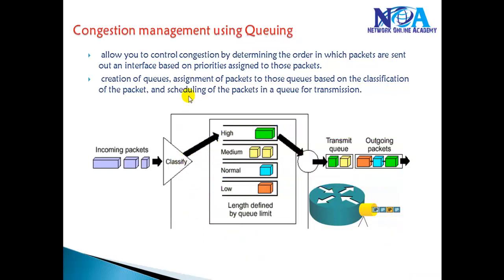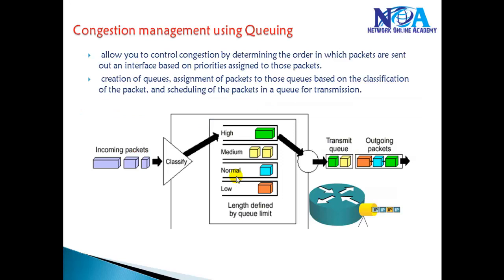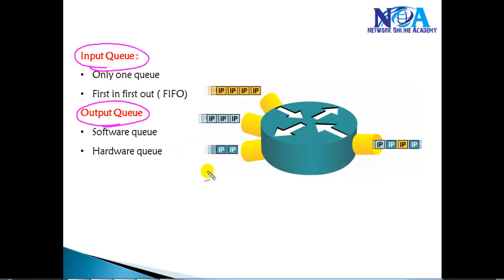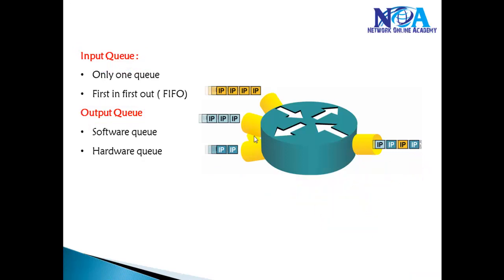We will discuss different queuing mechanisms in this section in much more detail. But first, let us understand some basic queuing options. Queuing is a mechanism of arranging packets into the local buffer before sending on the output interface, instead of getting dropped, in case there is any congestion. There are two types of queues: input queue and output queue. Input queue arranges all received packets in the local input buffer before sending to the router for processing. Output queue stores packets in an output buffer before sending on the output interface.